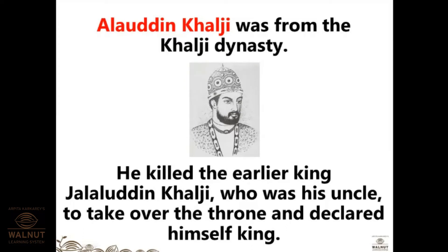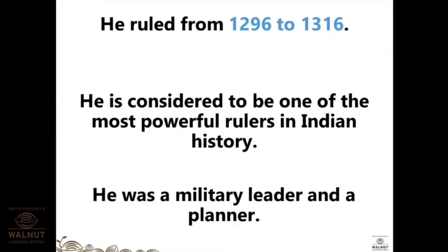Alauddin Khalji was the emperor of the Khalji dynasty and ruled the Delhi Sultanate in the Indian subcontinent. He was the nephew and also the son-in-law of Jalaluddin Khalji, yet he killed Jalaluddin Khalji and became king. He instituted a number of significant administrative changes related to revenue, price controls, and society.